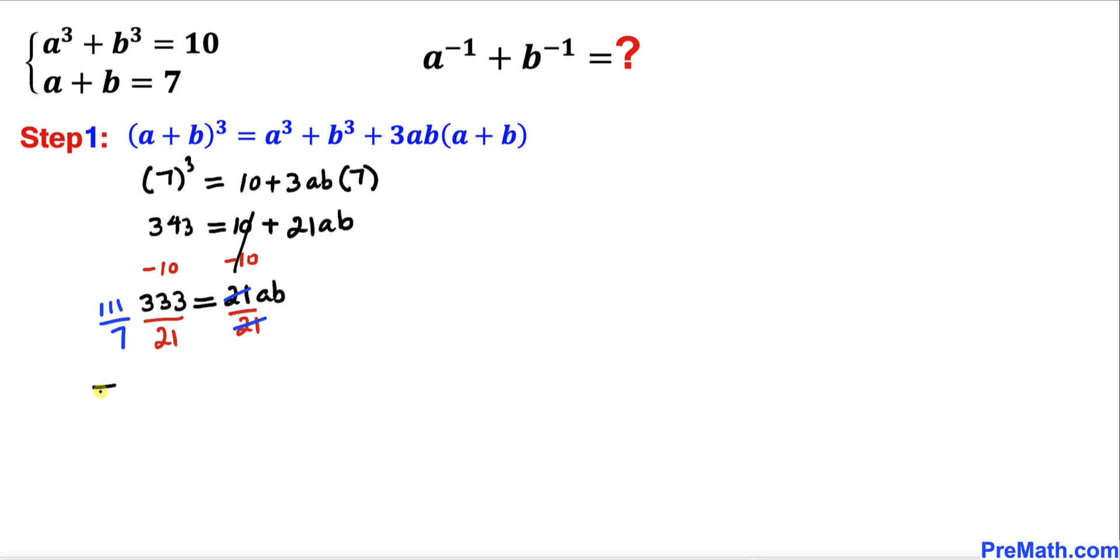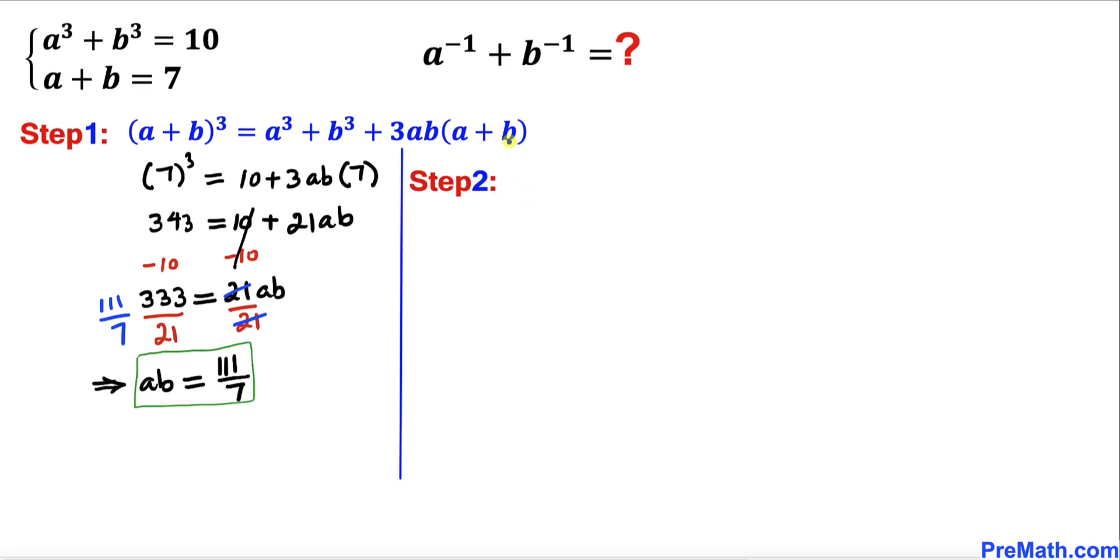So therefore our ab value turns out to be 111 divided by 7, and here's our next step.